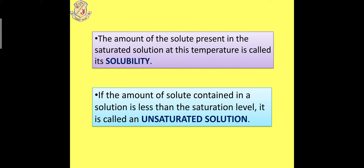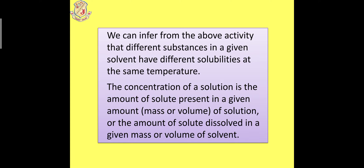We can infer from the above activity that different substances in a given solvent have different solubilities at the same temperature. For example, salt, sugar, barium chloride, and sodium chloride will each have different solubilities at the same temperature.